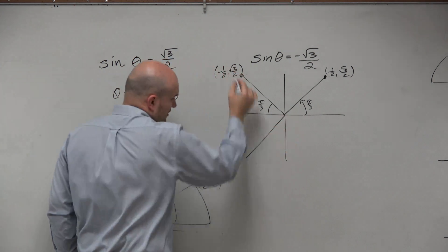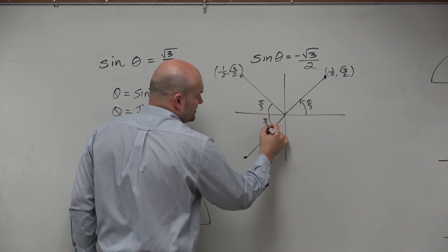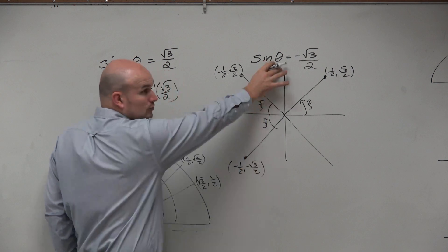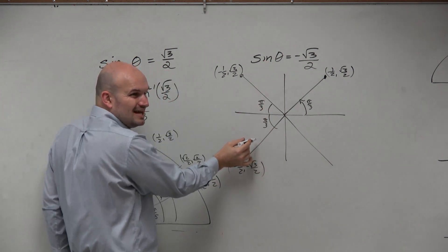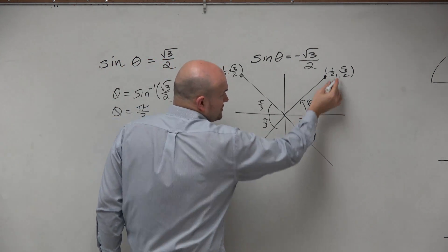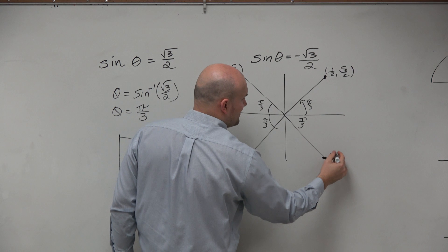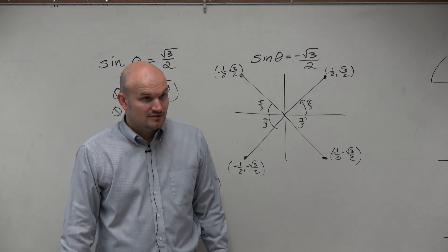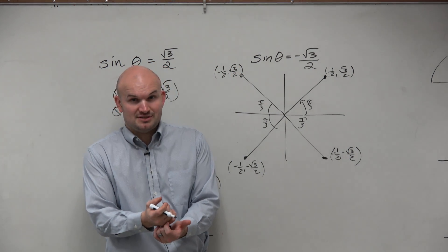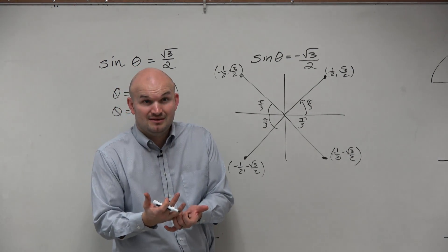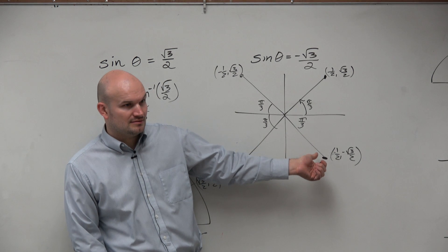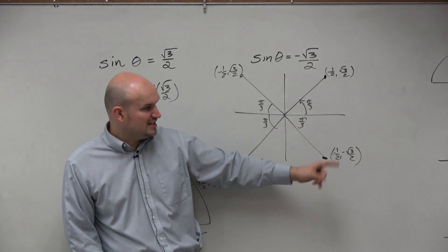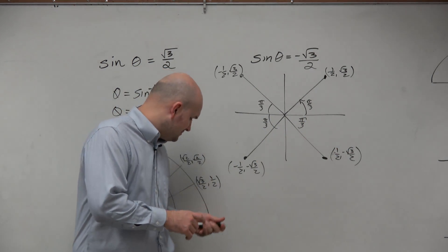So then we go down and flip this the other way. The reference angle is still the same. This angle has coordinates negative one-half, comma, negative square root of 3 over 2 — that's our answer. But it's not just one; there are two. Because if we took this point and reflected it over, we'd have positive one-half, comma, negative square root of 3 over 2. When you enter this in your calculator, is it supposed to give you two answers? No, only one. So which one is it? It has to be the one in the fourth quadrant.